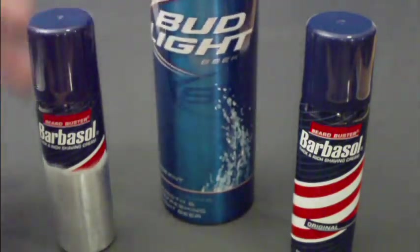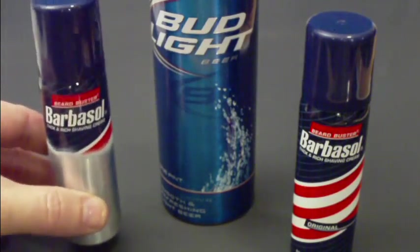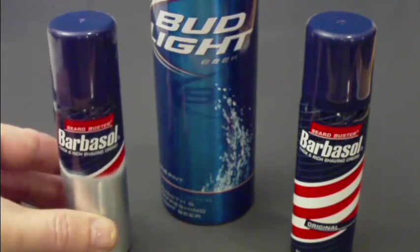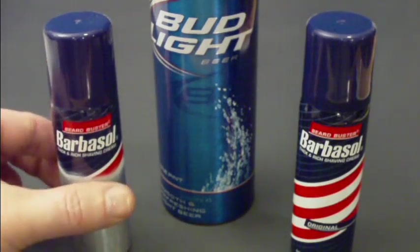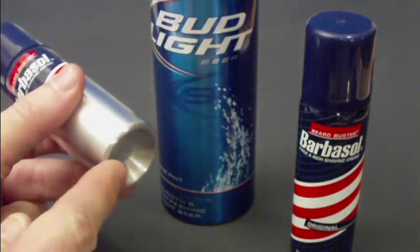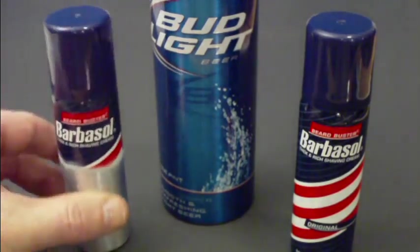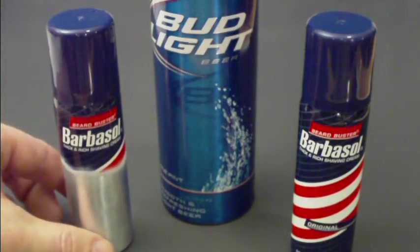you're going to need a 2.25 ounce Barbasol shaving cream canister. Now you can use a Gillette canister or a mini axe can. They're virtually the same size, but the reason that we're using these Barbasol canisters are for the deeper indention on the bottom. They tend to work better with this design. And I'll show you why as we proceed here. And as you can see, I've got this canister all stripped of paint and ready to go.